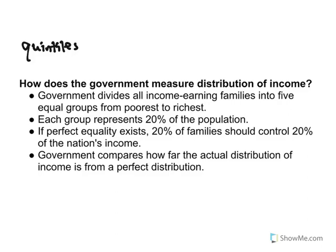What the government does is compare how far the actual distribution of income is from a perfect distribution. For example, what if 80% of the nation only controls 60% of the nation's income? How far away from perfect income equality are we, and what policies could we put into place to try to make that more even? That's the idea behind measuring income inequality.